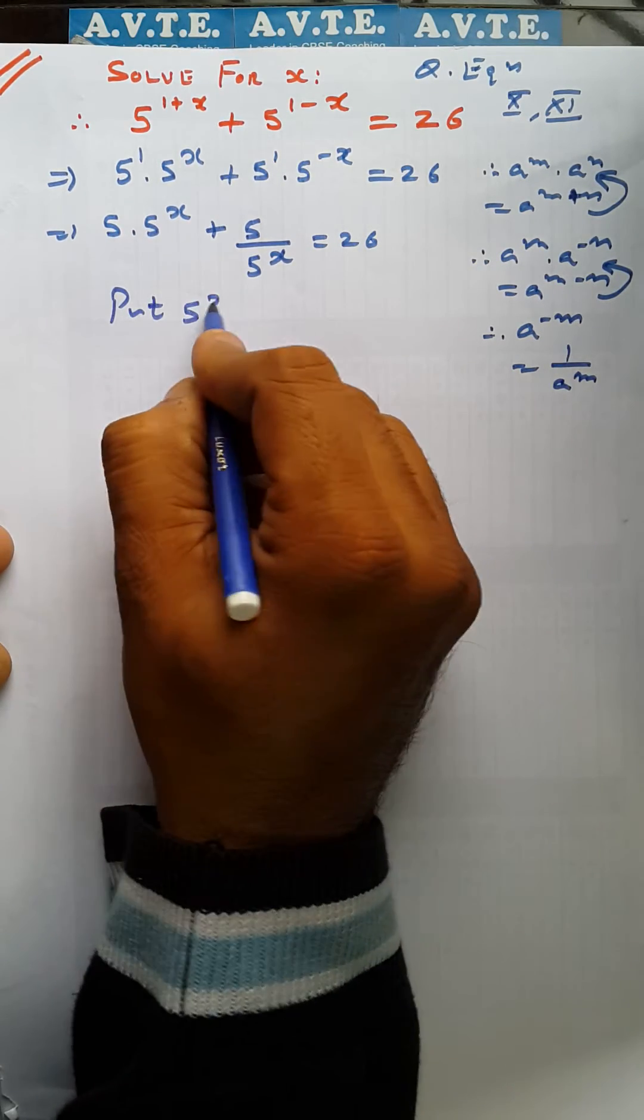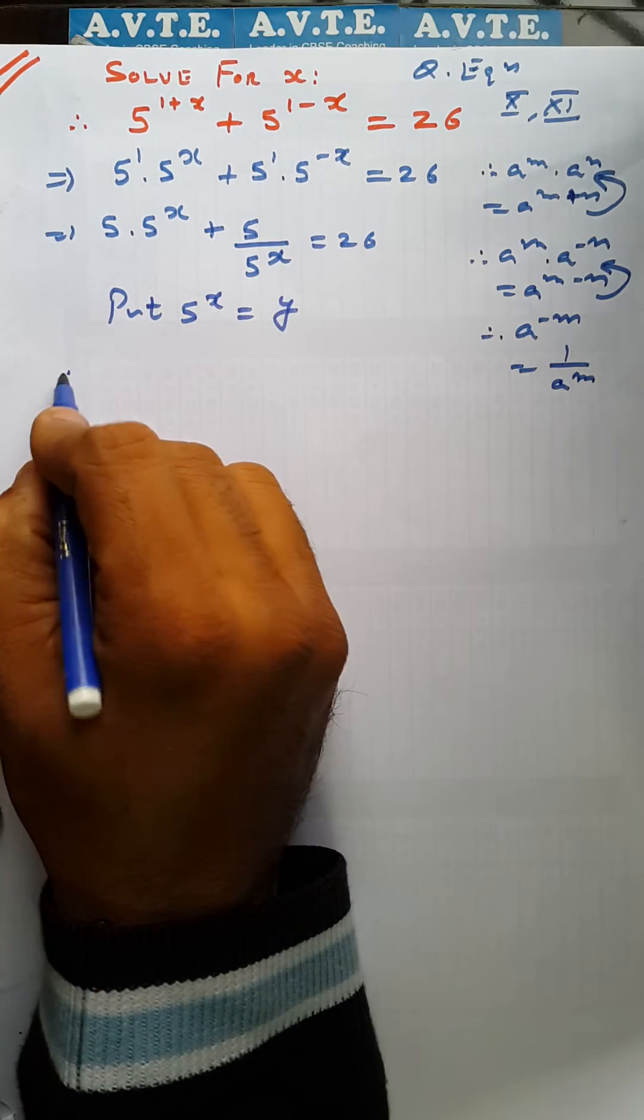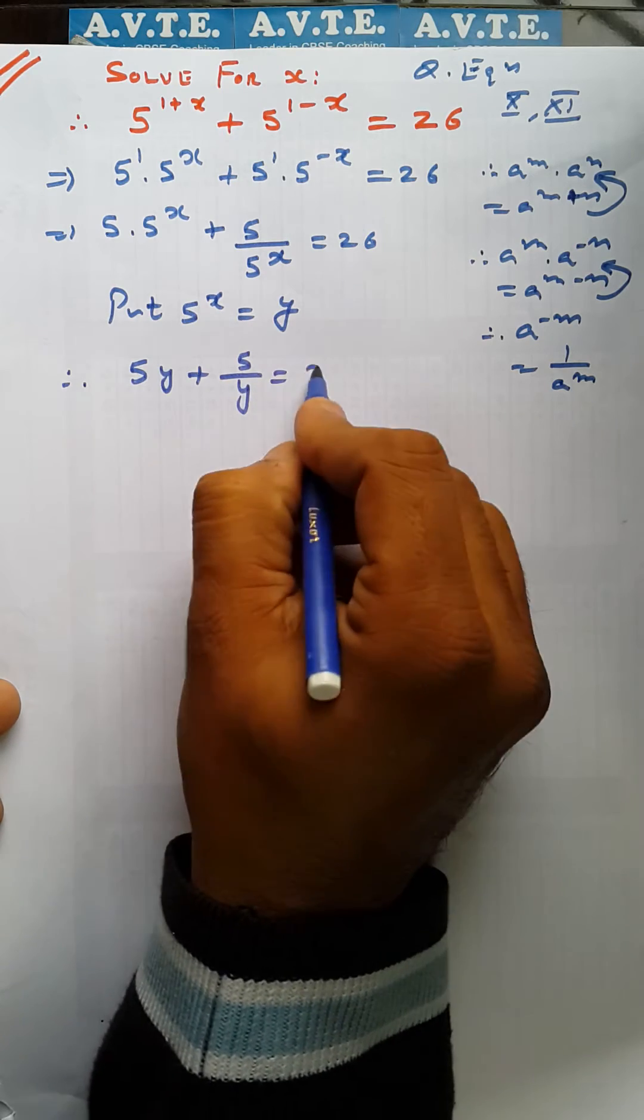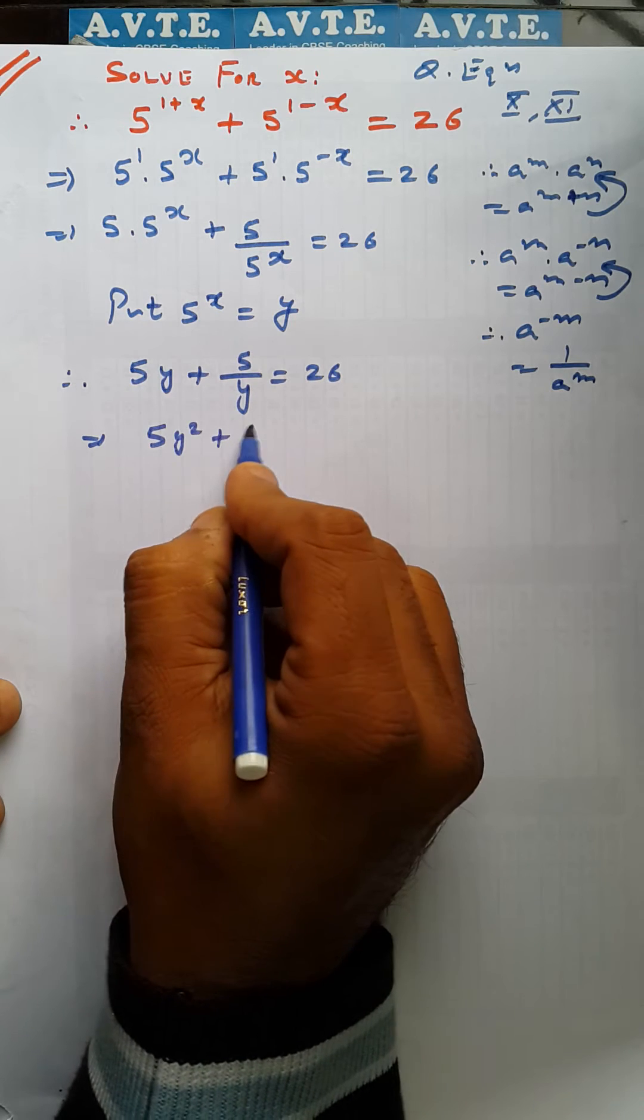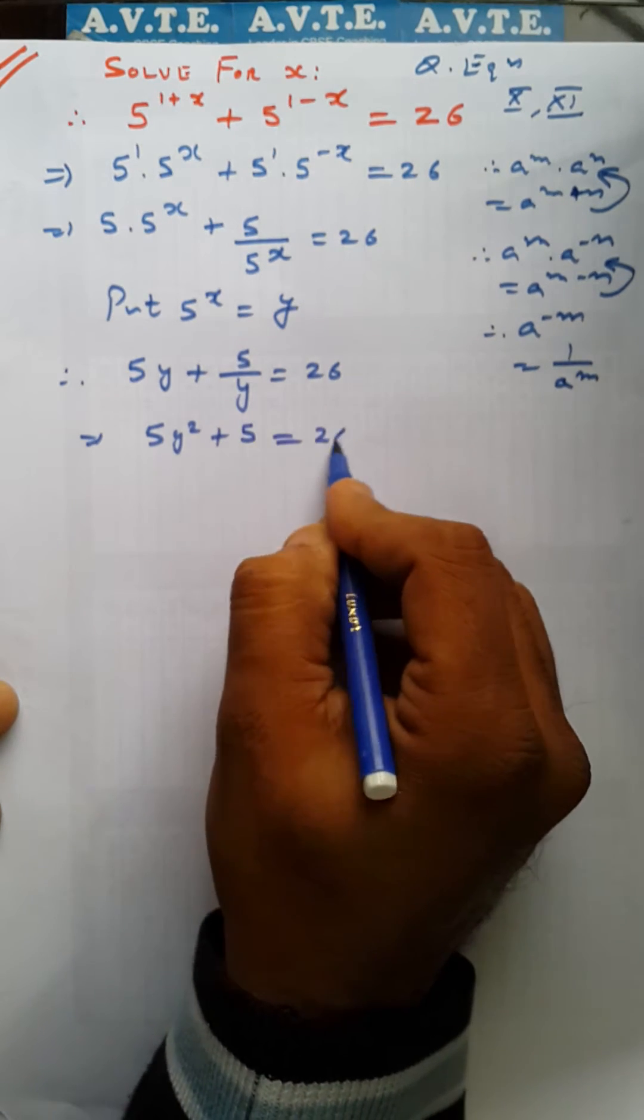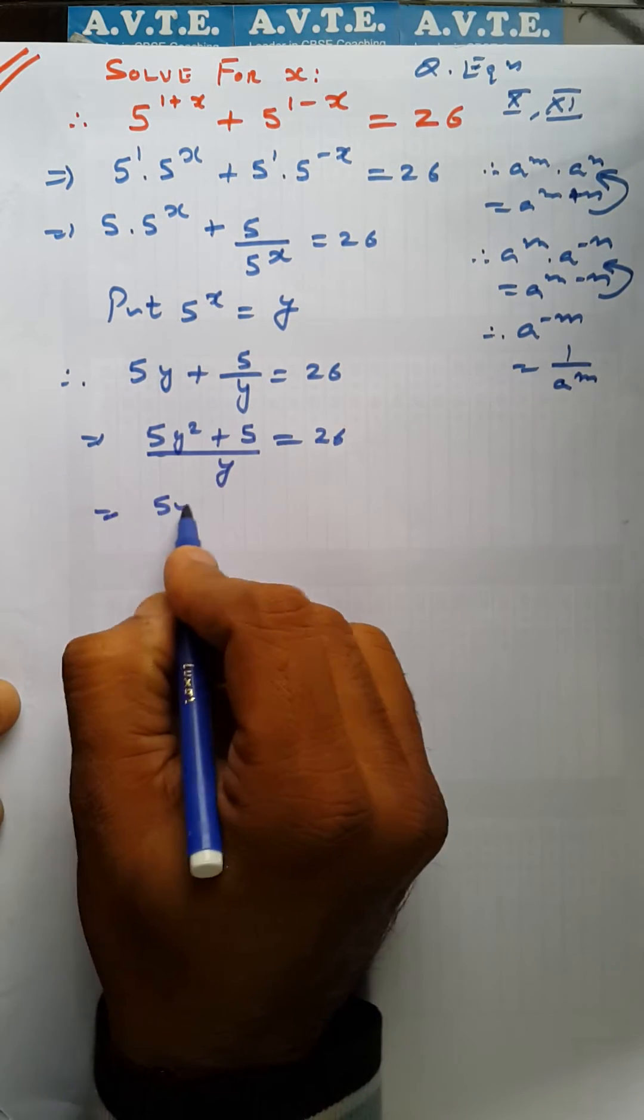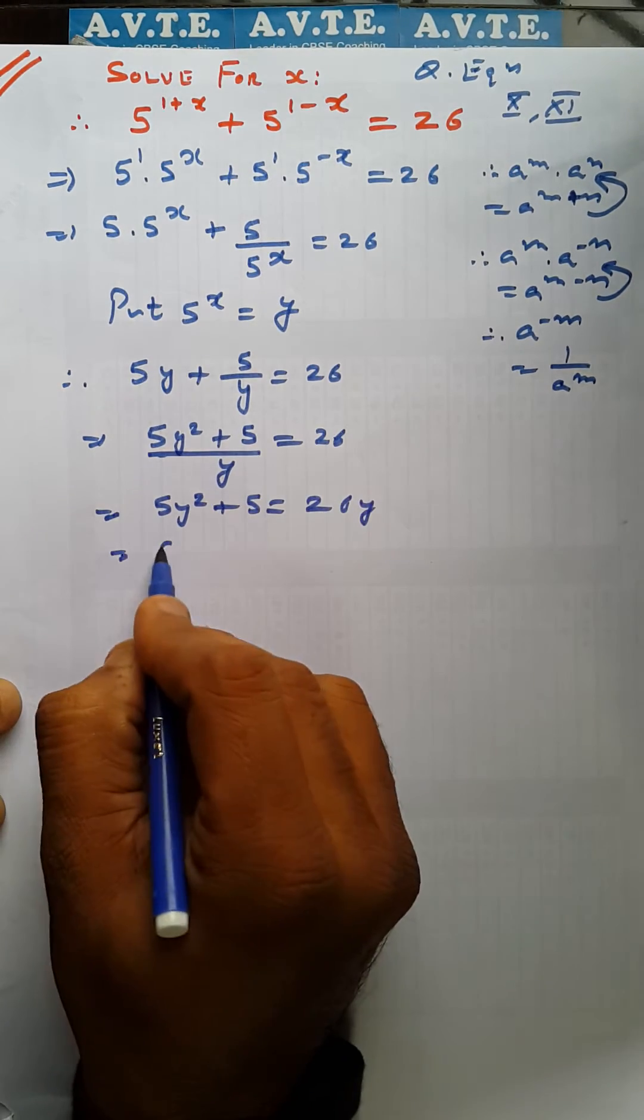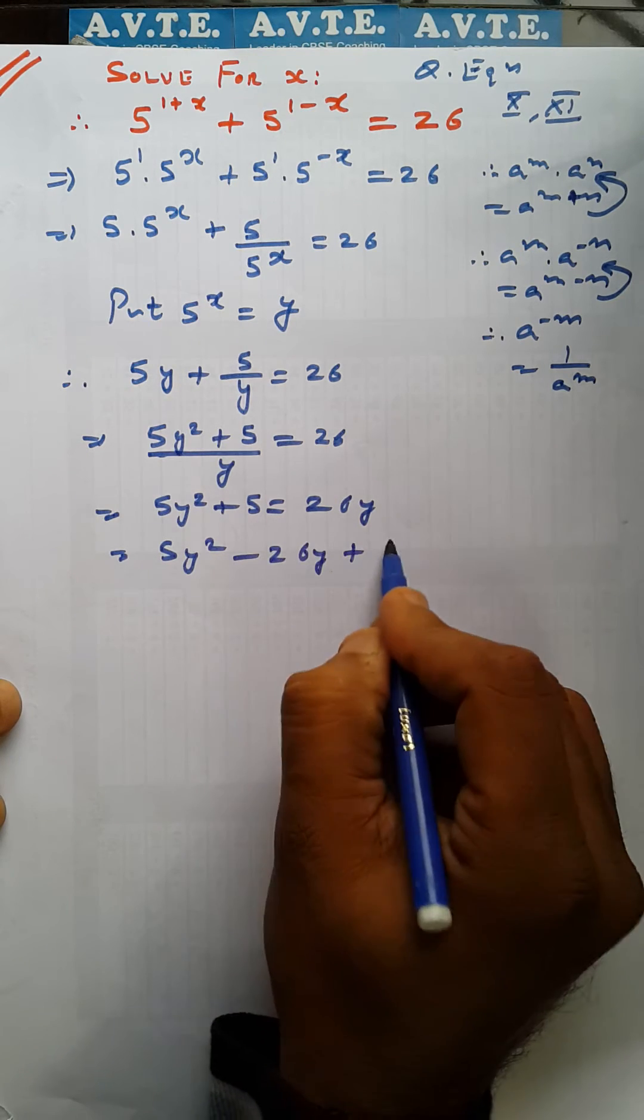Now put 5 raised to the power x as any variable like y. So it is 5y plus 5 upon y is equal to 26. We just check out the LCM. 5y squared plus 5 upon y is equal to 26. This y goes here. It becomes 5y squared plus 5 equals 26y. Take 26 there. It is standard form. 5y squared minus 26y plus 5 is equal to 0.